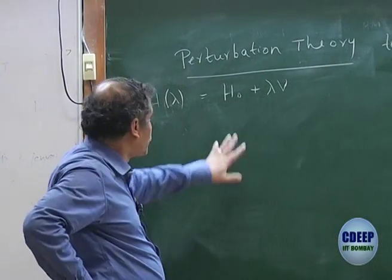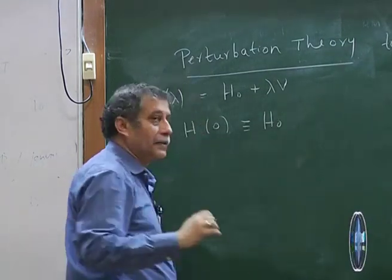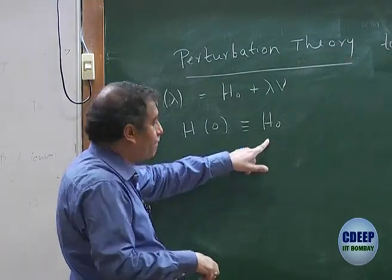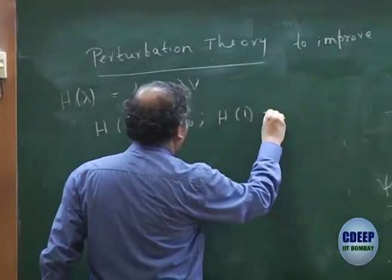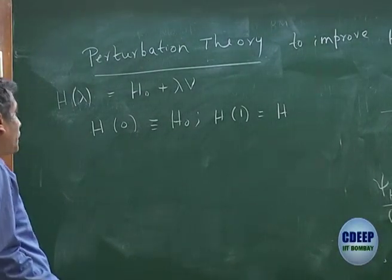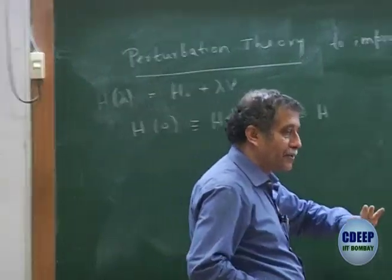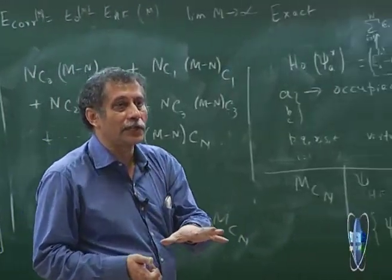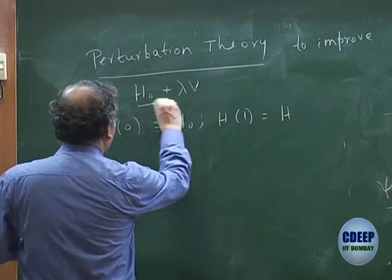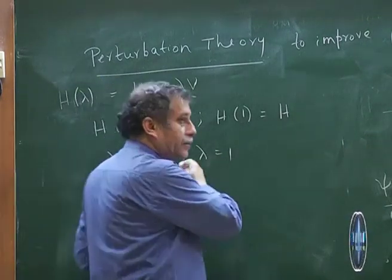At λ = 1, this becomes the full H. At intermediate values, it keeps changing between H₀ and V. So I can switch on the perturbation from λ = 0 to λ = 1. At λ = 0, there is no perturbation; at λ = 1, I have the full Hamiltonian H. Then what we do is analyze the solutions of H(λ).